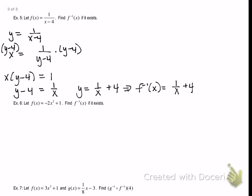To sum up: the horizontal line test tells me if the inverse function exists. If a graph passes both the vertical and horizontal line tests, it's one-to-one. For inverses from a table, switch the x and y values to plot the graph. To verify inverses, compute f(g(x)) and g(f(x)); if both equal x, they're inverses. Example 5 showed how to find the inverse algebraically. We'll do the remaining examples when I'm back next class — now go ahead and work on the homework.